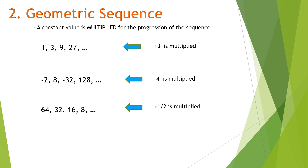Last example: 1, negative 1/3, positive 1/9, negative 1/27. Notice there is also an alternating sign — positive, negative, positive, negative. That is a distinct characteristic of a geometric sequence. The number being multiplied here is negative 1/3. Hope you understand what a geometric sequence is and what makes it different from arithmetic sequence.